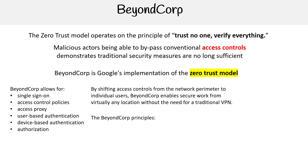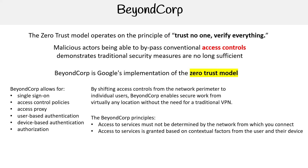The principles of BeyondCorp are: access to services must not be determined by the network from which you connect; access to services is granted based on contextual factors from the user and their device; and access to services must be authenticated, authorized, and encrypted.